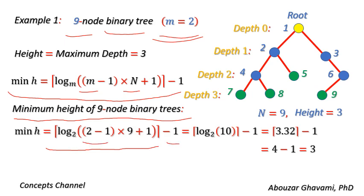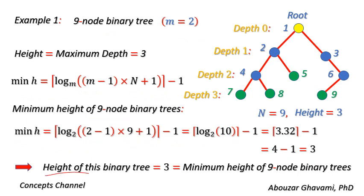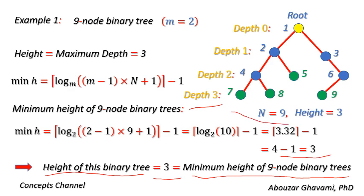2 minus 1 is 1; 1 times 9 plus 1 is 10; log base 2 of 10 is 3.32; and ceiling of 3.32 is equal to 4. Thus, the minimum height of 9-node binary trees is equal to 4 minus 1, which equals 3. We obtained that the minimum height of 9-node binary trees is also equal to 3, confirming this 9-node binary tree is one of the 9-node binary trees that has minimum height.